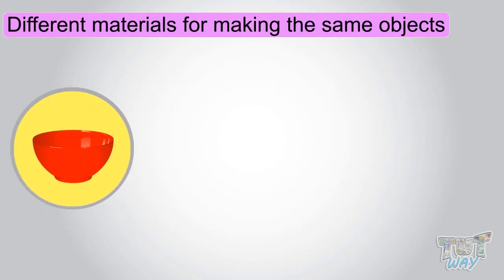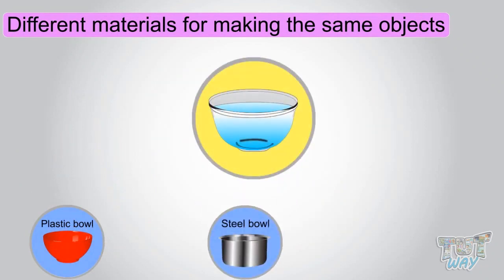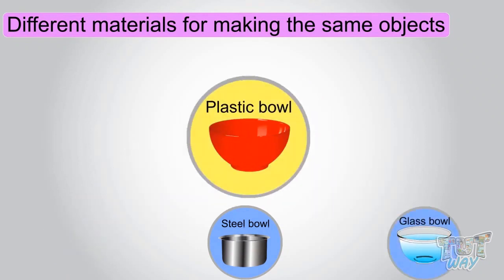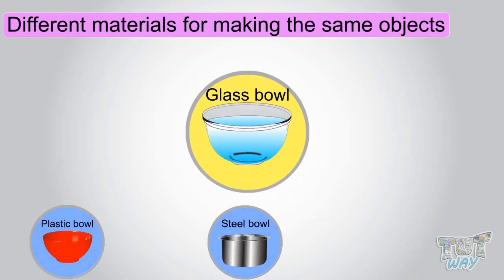Bowl. This bowl is made up of plastic. This bowl is made up of steel. This bowl is made up of glass. The bowl made up of plastic will be lighter and the bowl made up of steel would be heavier but long-lasting. The bowl made up of glass will be breakable.